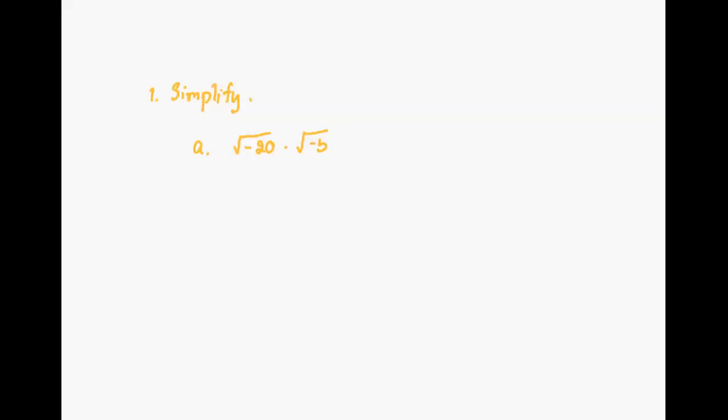For an example, we're going to simplify the given expressions. The first one is the product of the square root of negative 20 and the square root of negative 5. Recall the definition: if a is greater than zero, then the square root of negative a equals i times the square root of a. So we start by rewriting both square root of negative 20 and square root of negative 5 in imaginary form.